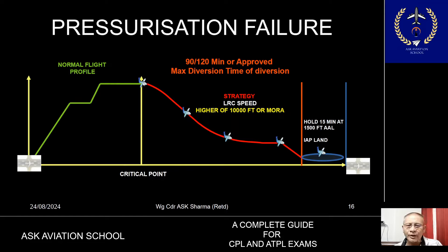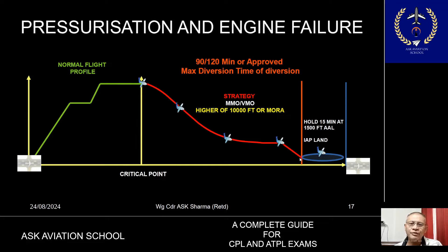The aircraft carries out an emergency descent at VMO/MMO, coming down to flight level 100 where there are no significant obstacles. Where a significant obstacle exists, the aircraft levels out at MORA, then flies at LRC speed for 90 minutes, 120 minutes, or any other approved maximum diversion time, and lands at the alternate airport.